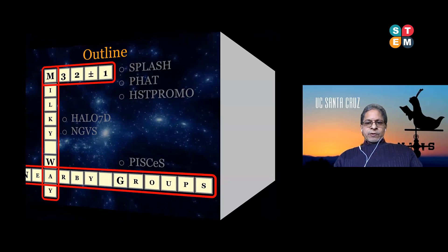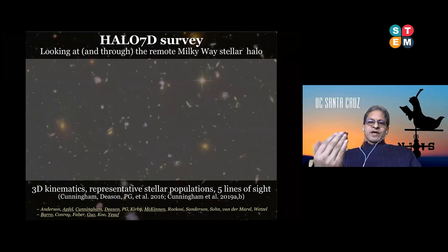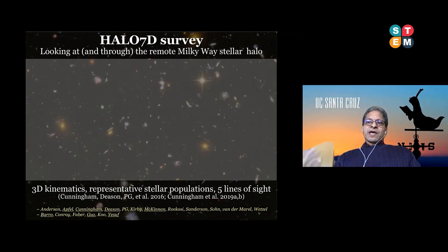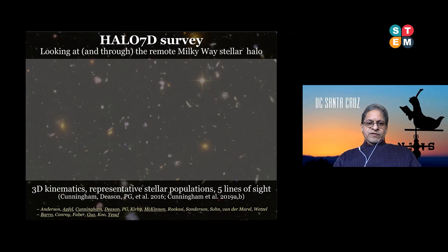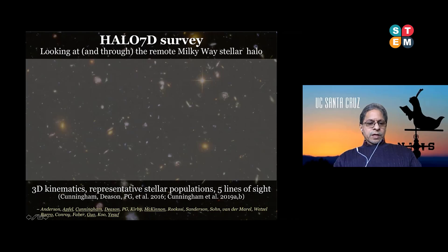Plunging right into the Milky Way halo, I'll present some results from the Halo 7D survey that's been going on for a few years now. This survey entails looking at the stellar halo of the Milky Way. Because the stellar halo is very sparse, we both look at and through it. Our main science objective is to study the three-dimensional kinematics of representative stellar populations along five lines of sight to and through the Milky Way halo. Most of this work is described in three papers led by Emily Cunningham, a former PhD student.